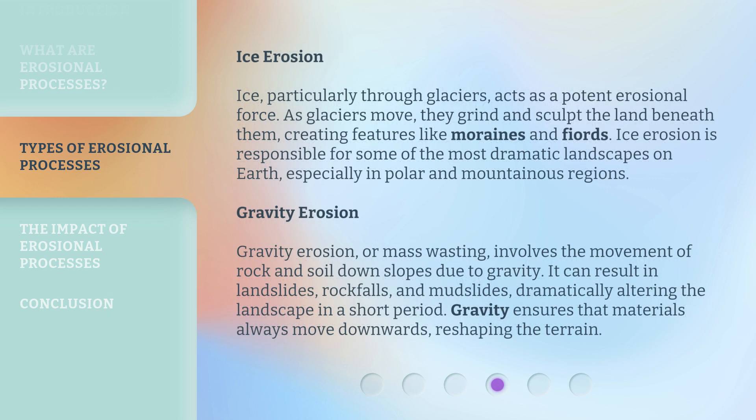Ice Erosion. Ice, particularly through glaciers, acts as a potent erosional force. As glaciers move, they grind and sculpt the land beneath them, creating features like moraines and fjords. Ice erosion is responsible for some of the most dramatic landscapes on Earth, especially in polar and mountainous regions.